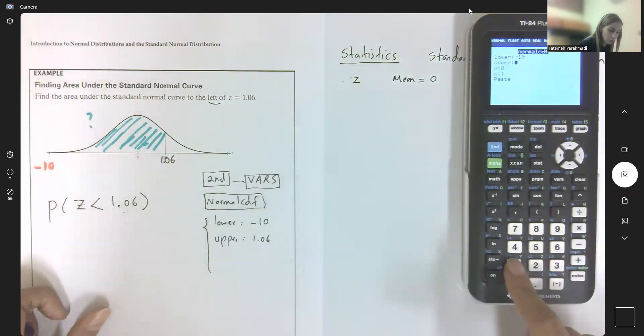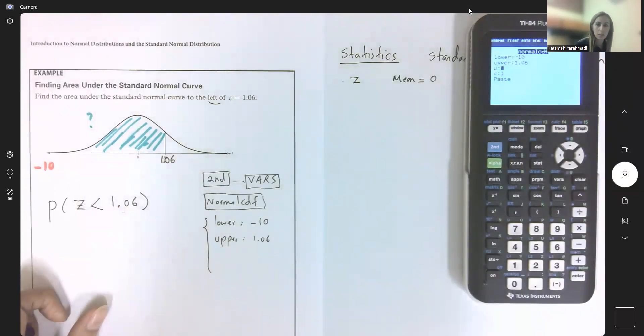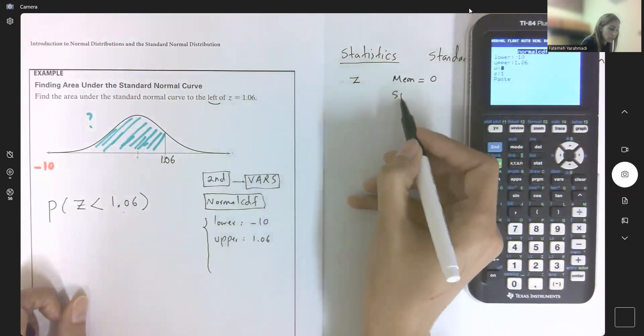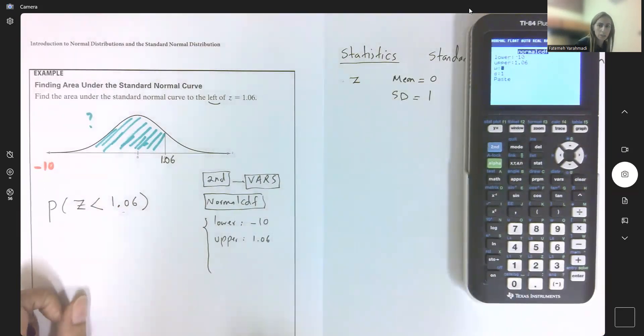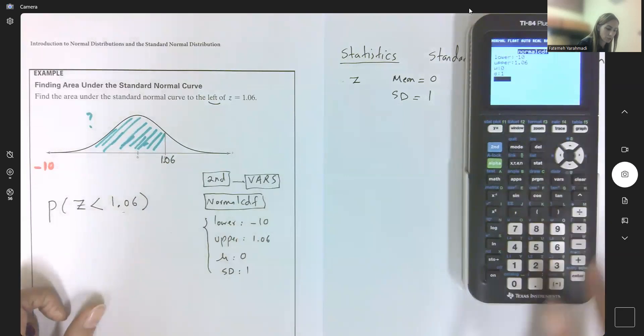What is the mean and standard deviation? Remember that for z-scores, mean is always zero and standard deviation is fixed at one. We don't have to change these two values. Mean is zero and standard deviation is one.